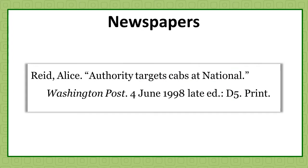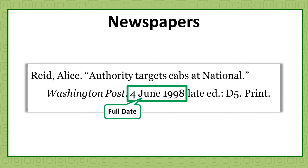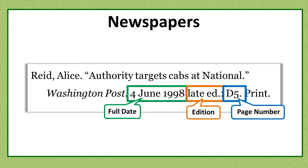Newspapers will usually include a full-date publication. If the newspaper was published more than once in a day, it could also have an edition notation. Page numbers in printed newspapers are unique in that they often include a letter indicating a section followed by a number.